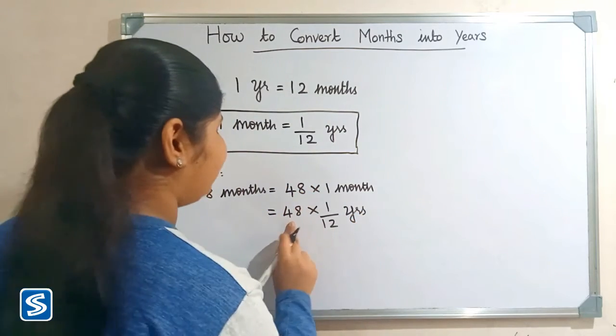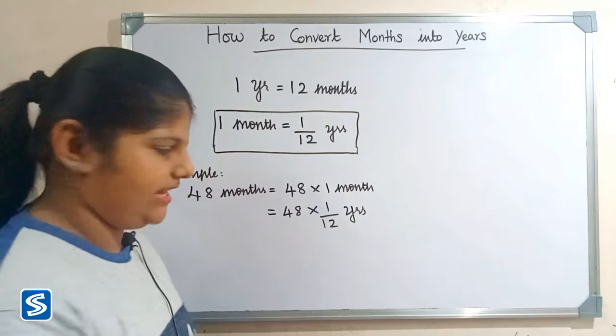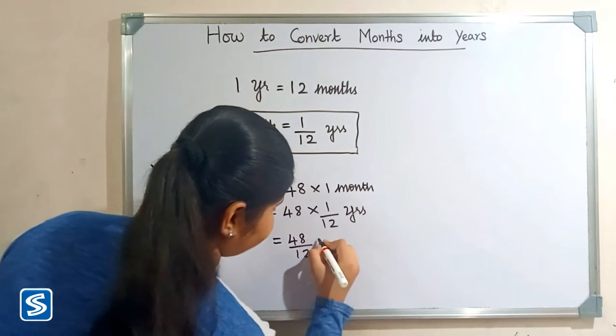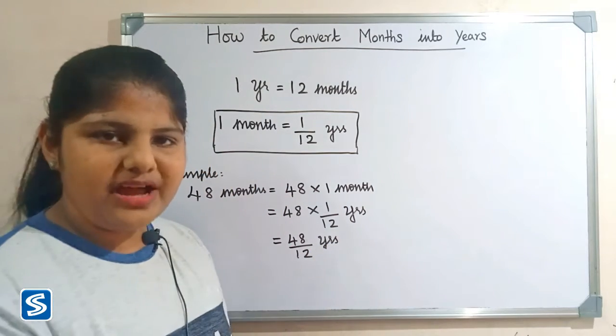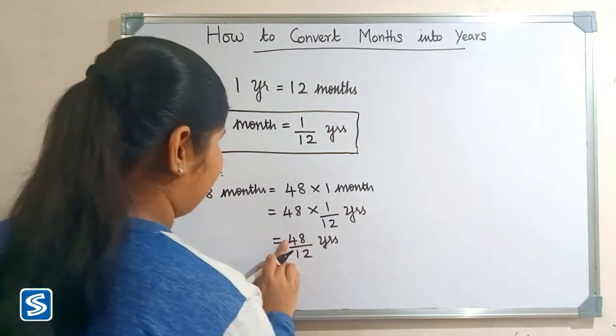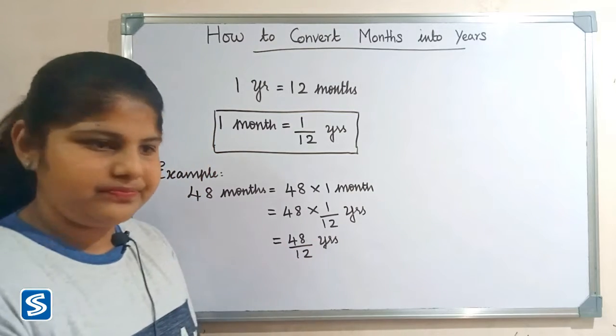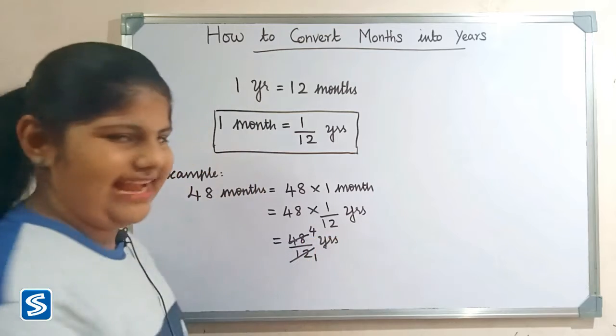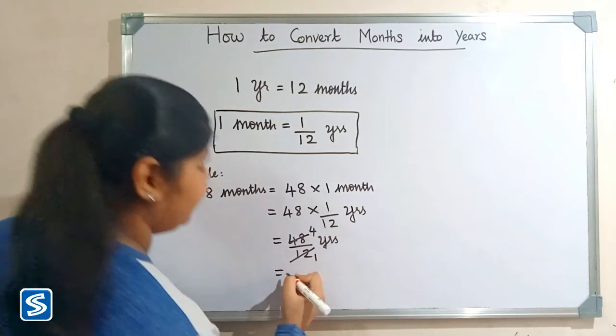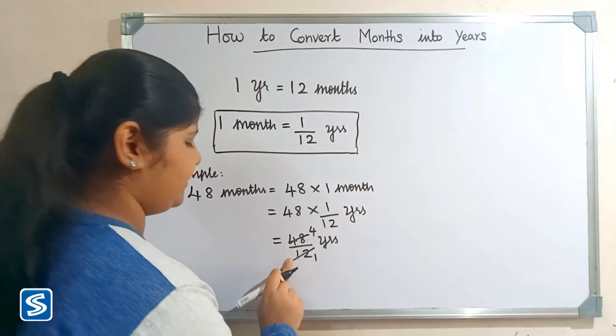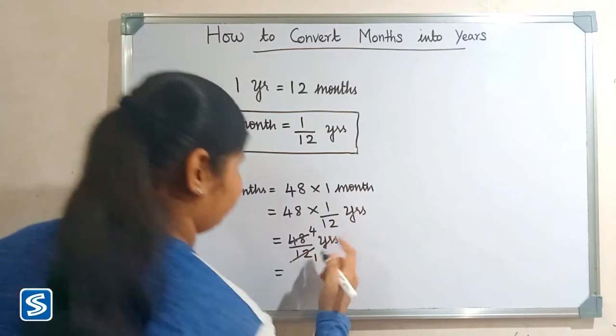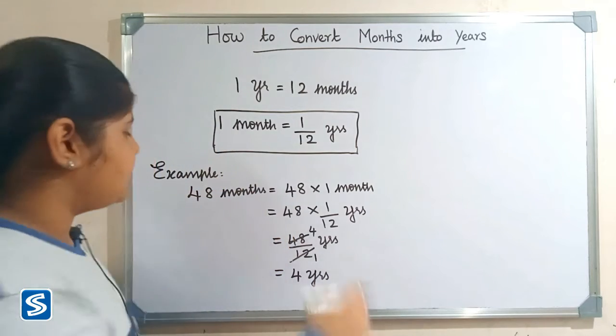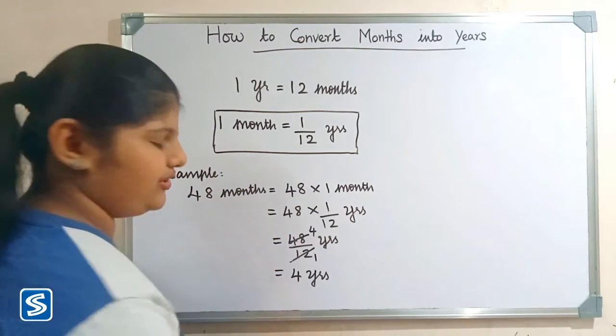48 × 1 will be 48, so 48/12 years. Now we have to divide 48 by 12. 12 fours are 48. So when we divide 48 by 12, our answer will be 4 years. Therefore, 48 months is equal to 4 years.